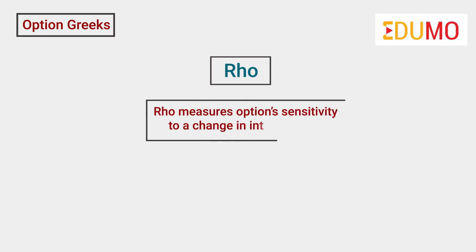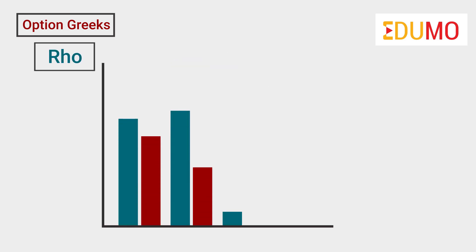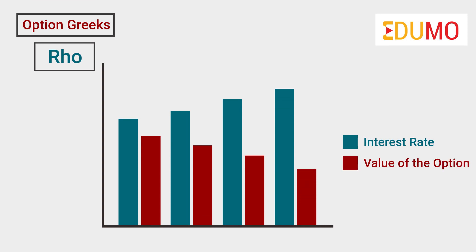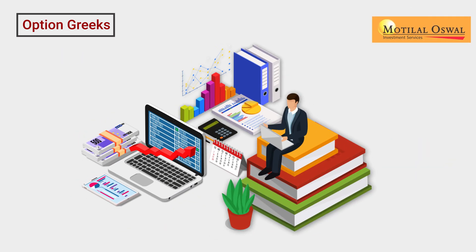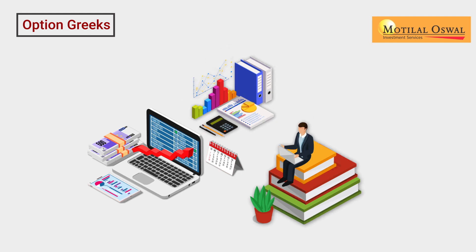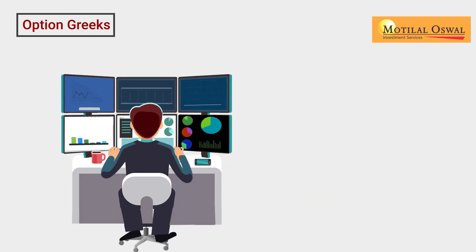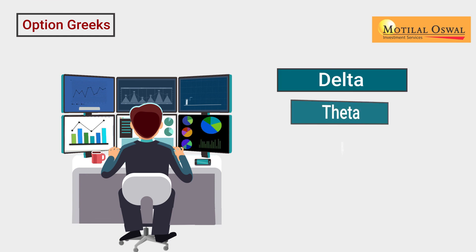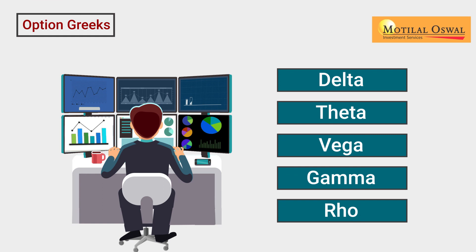Lastly, we have the Rho. It measures an option's sensitivity to a change in interest rates. Therefore, any increase in the interest rate may lead to a fall in the value of the options contract, since it will increase the cost of carrying the position. Trading in options requires learning and expertise. An options trader should be well-learned with every aspect of option trading, including different option Greeks that we just discussed in this video.